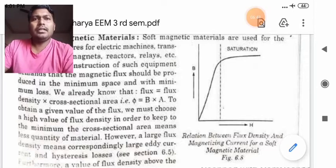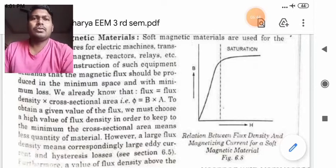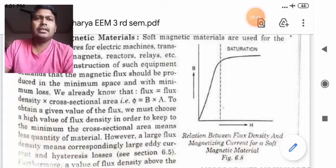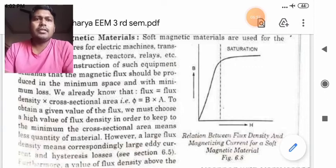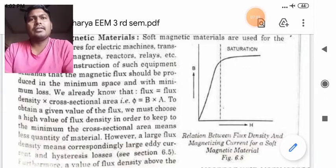To obtain a given value of the flux, we must choose a high value of flux density in order to keep to the minimum cross section area that means less quantity of material. However, a large flux density means correspondingly large ED current and hysteresis loss.